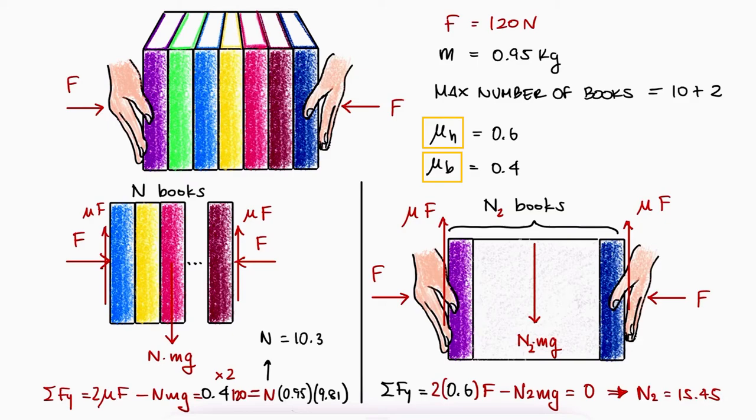The middle stack will be held by adjacent books with a friction coefficient of 0.4, which means that the weight of only 10.3 books can be held by the friction force going up.